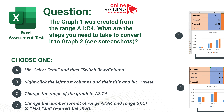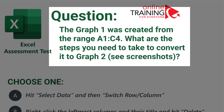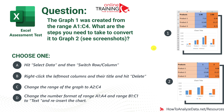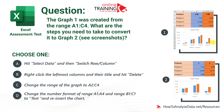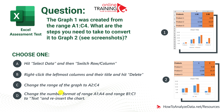Let's look at a question that tests your knowledge of Microsoft Excel charts and graphs. Graph 1 was created from range A1 through C4. What are the steps needed to convert it to graph 2? You are presented with two screenshots — one of the data and graph for graph 1, and one with the same data but graph 2. The four choices are: hit Select Data and then Switch Row and Column; right-click the leftmost column title and hit Delete; change the range of the graph to A2 through C4; or change the number format of range A1 through A4 and range B1 through C1 to text and reinsert the chart.